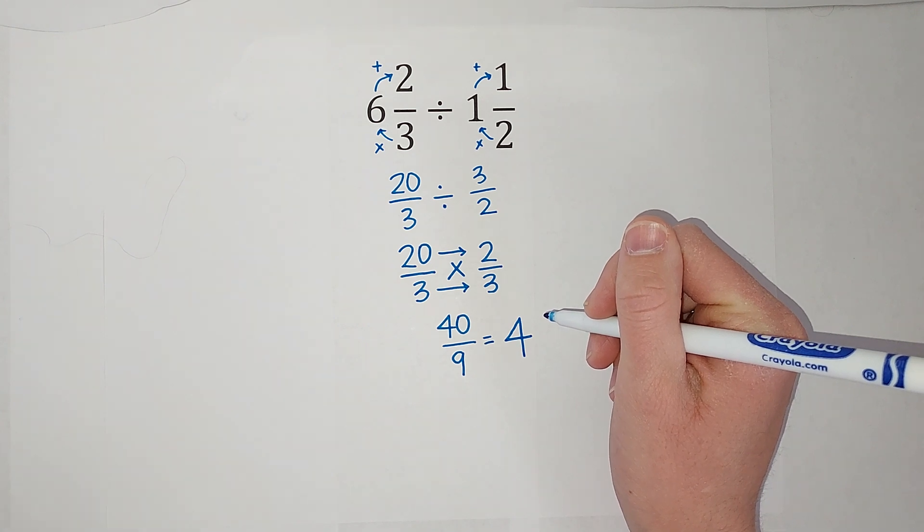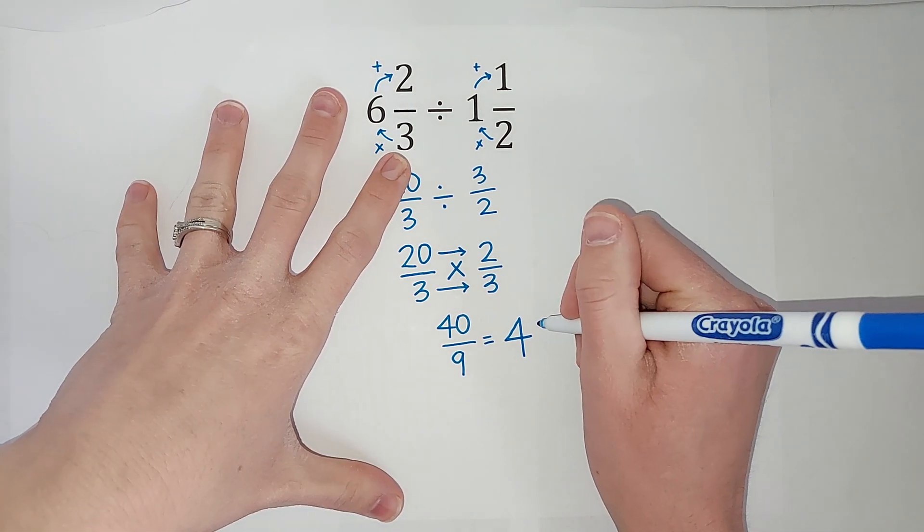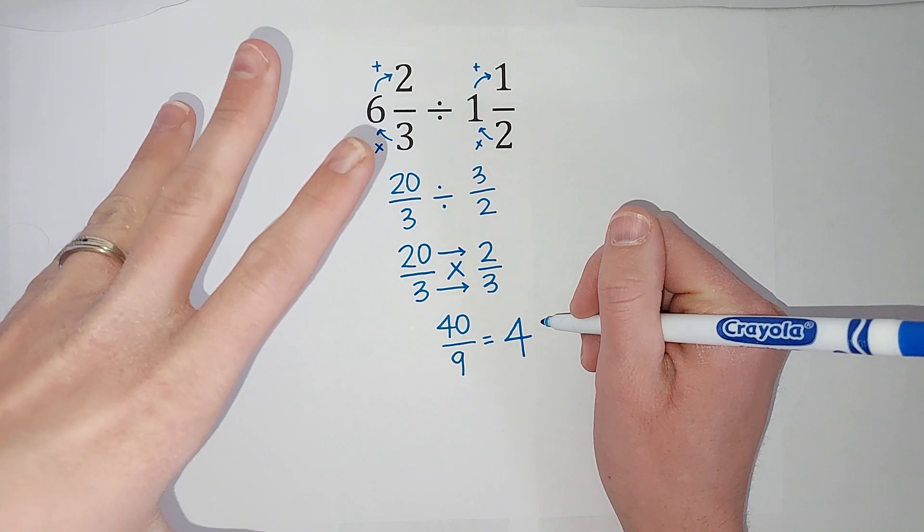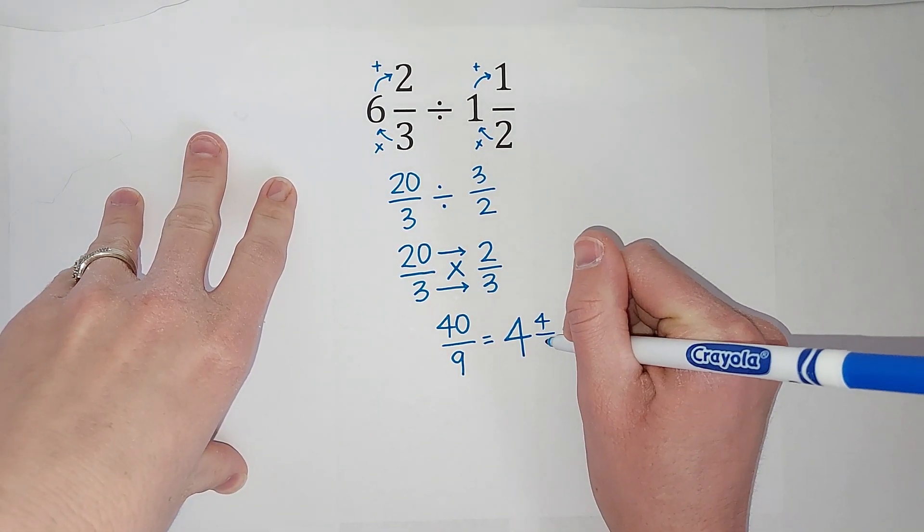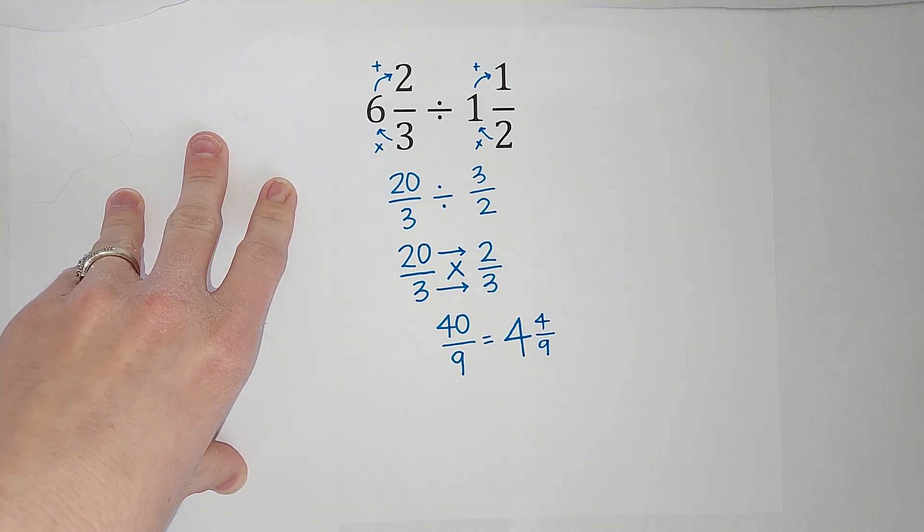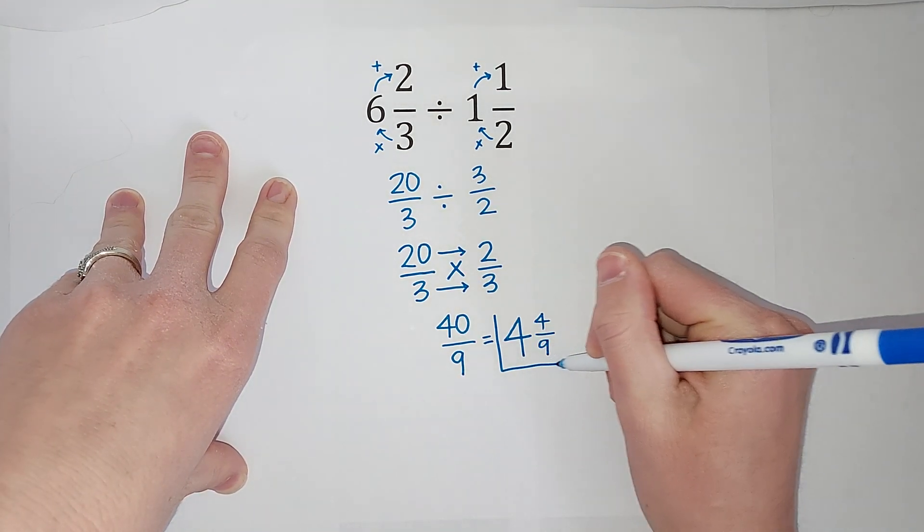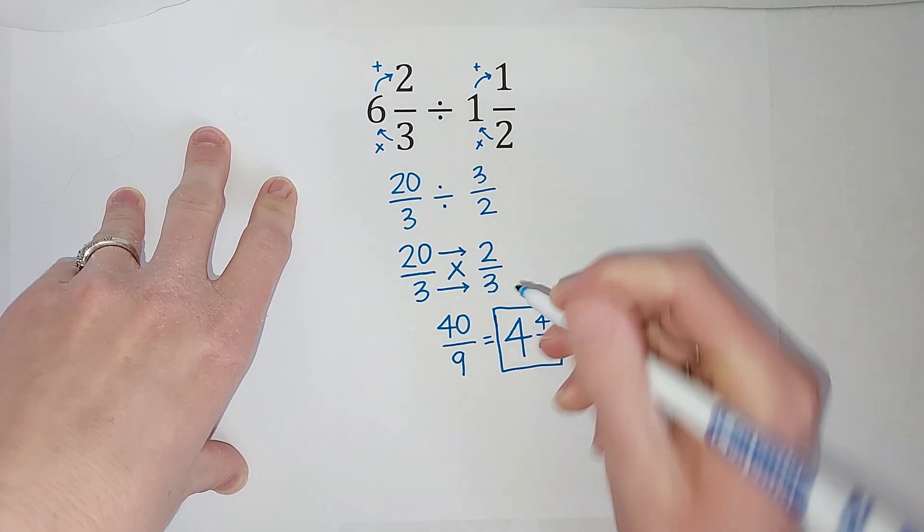So when I divide that into forty, I get thirty-six. Sorry, nine times four gives me thirty-six, right? So there's four left over, and we are still in ninths. So my answer is four and four ninths.